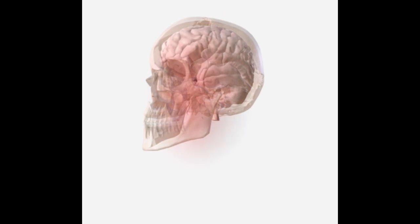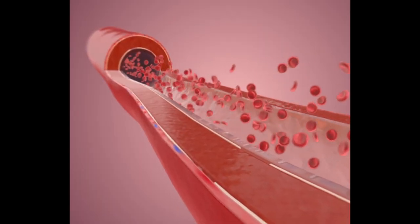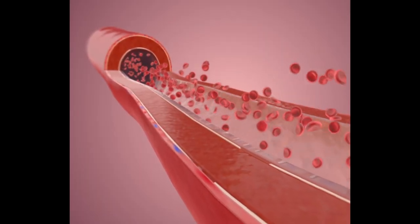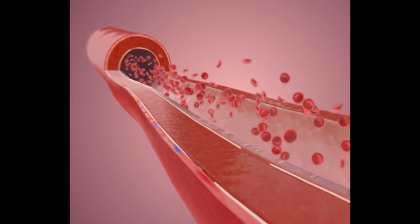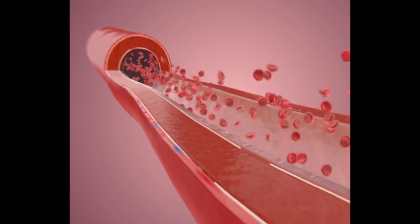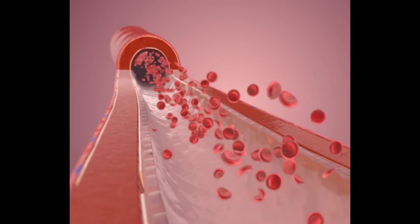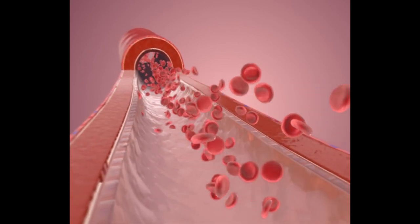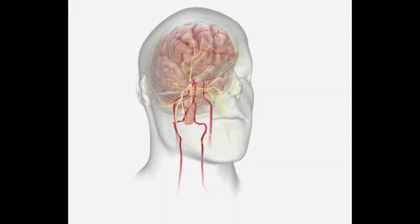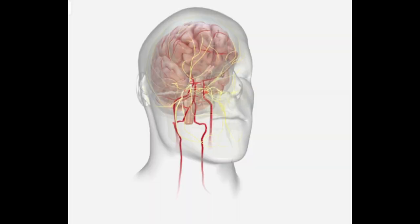The vascular theory of migraine postulates that changes in the caliber of cerebral vessels play a central role in the pathophysiology of the disease. The vasoconstriction phase occurs mainly in the posterior circulation, basilar and vertebral arteries, reducing cerebral blood flow and correlating with migraine aura.